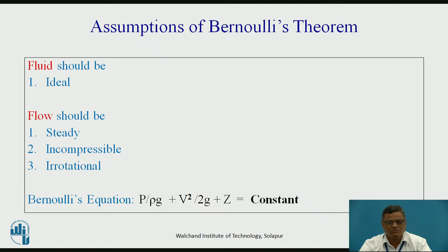The flow should be incompressible. In the case of liquids, liquids are incompressible, so the flow associated with liquids is incompressible. Next, the flow should be irrotational. When fluid particles travel from one position to another, if the particles are rotating about their own axis or mass centers, these are called rotational flows. If they are not rotating about their mass centers, we call that irrotational flow. It is not perfectly possible to achieve purely irrotational flow.